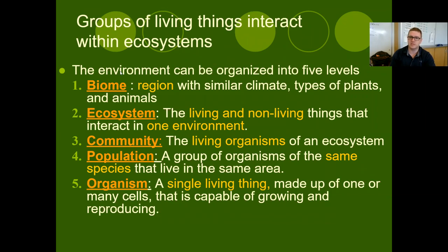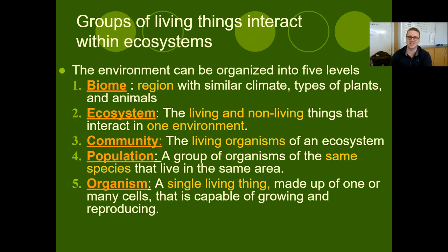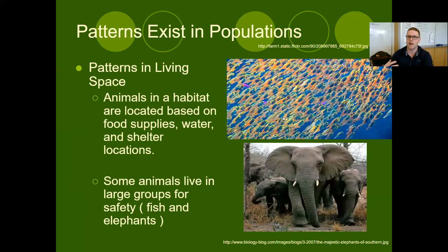We looked at all of these different words — our levels of organization that we care about for our ecology unit: organism, individual, population, community, ecosystem, and biome. Ecosystem is our big important one — that's the smallest level of organization where we have this interaction of living and non-living things, biotic and abiotic things and environment. So all of our discussion is really going to focus in at the ecosystem level and how all these things interact with each other.